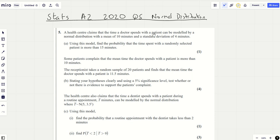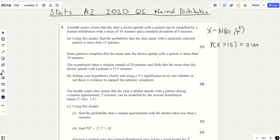Health Centre claims that the time a doctor spends with a patient can be modelled by a normal distribution. X is normal distribution with a mean of 10 and a standard deviation of 4. Using this model, find the probability that the time spent with a randomly selected patient is more than 15 minutes. So we're going to look for the probability that X is greater than 15. We're going to turn to our calculator and go to normal CD, lower is 15, upper is 15,000, sigma is 4 and mu is 10. And we find it's 0.106 to three significant figures. Easy one marker.